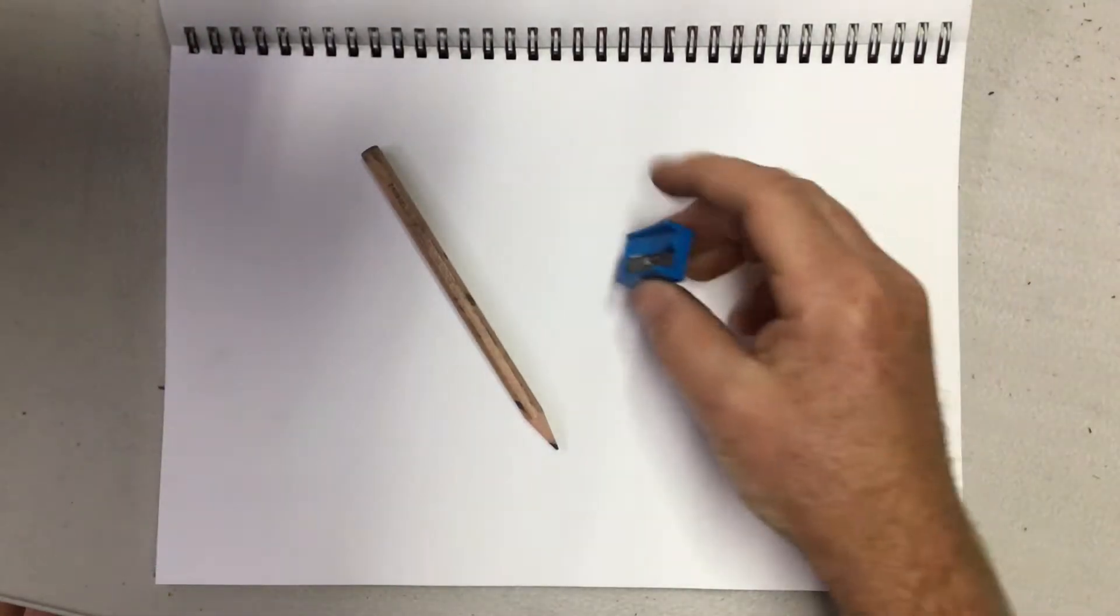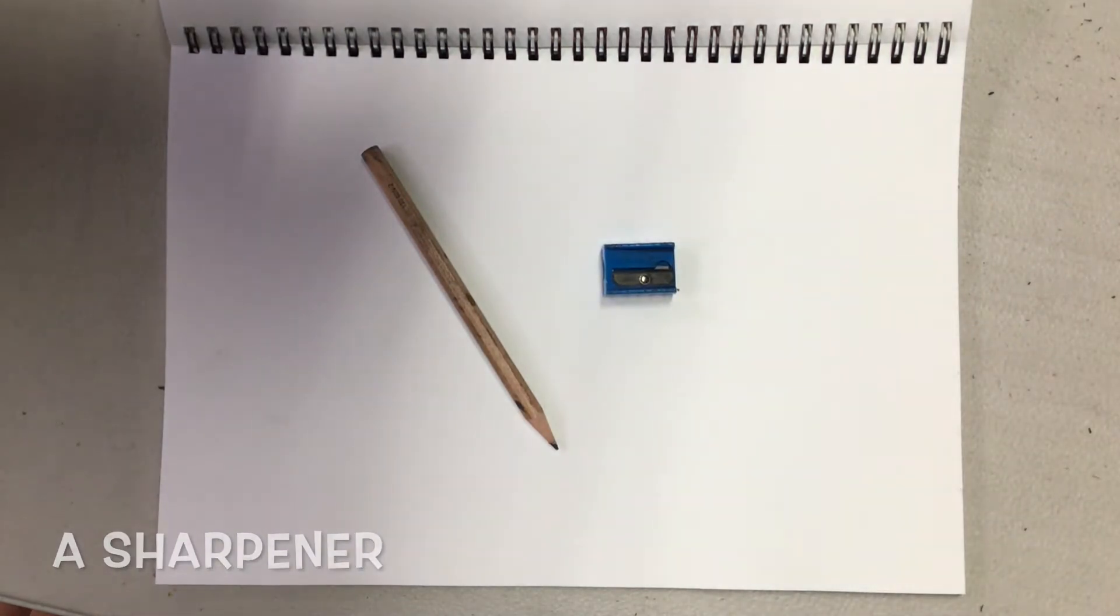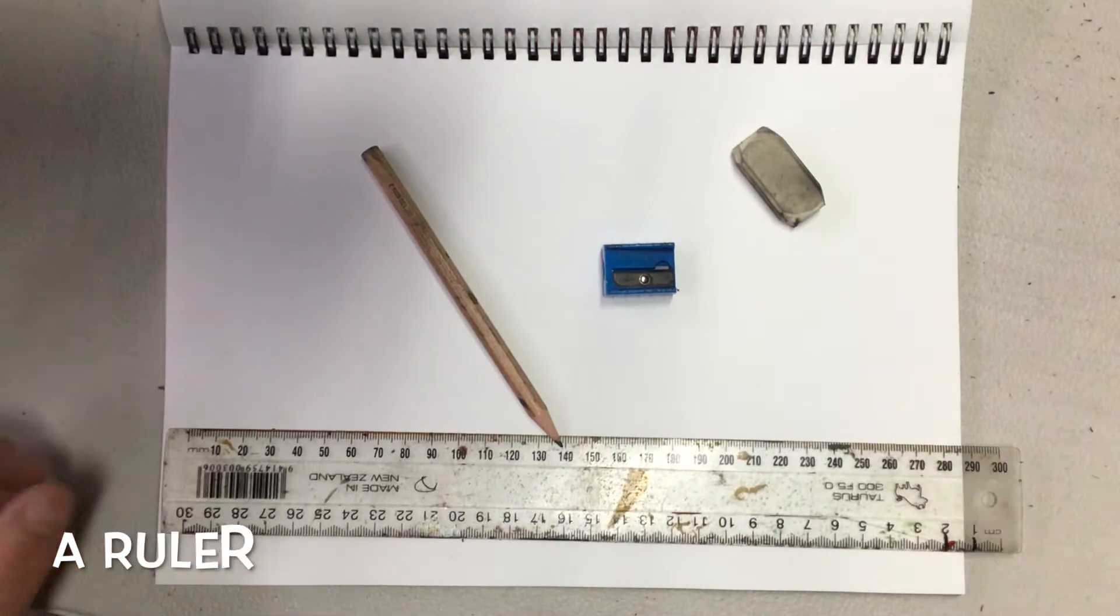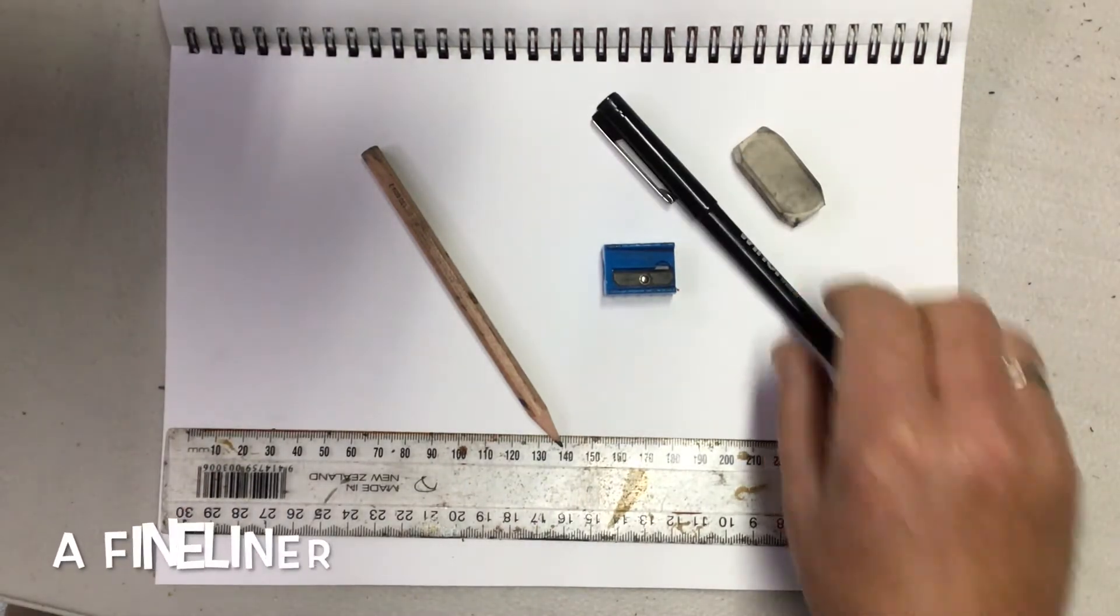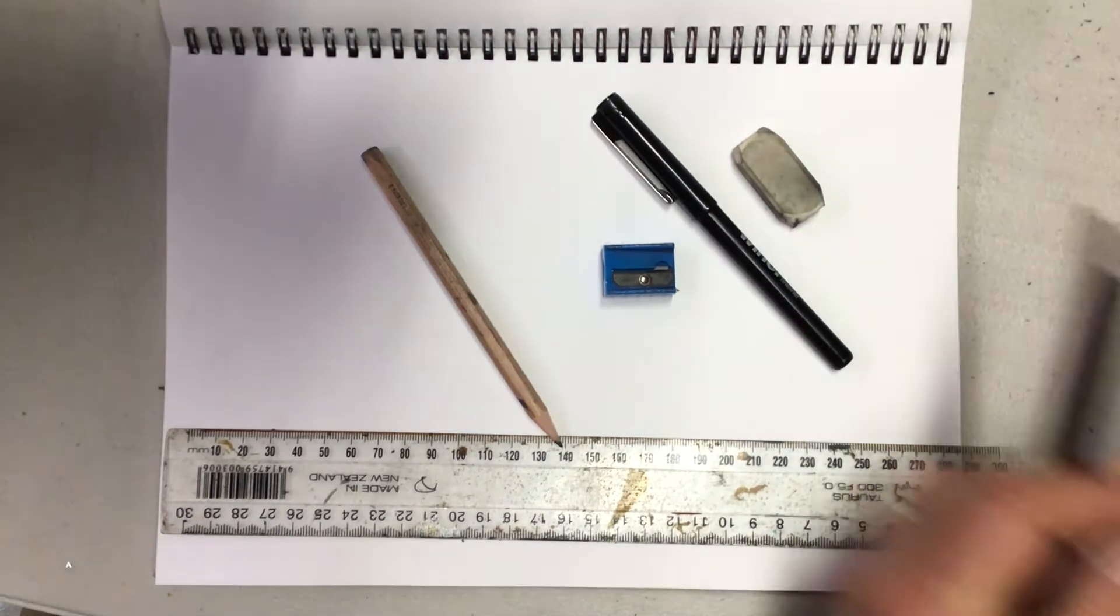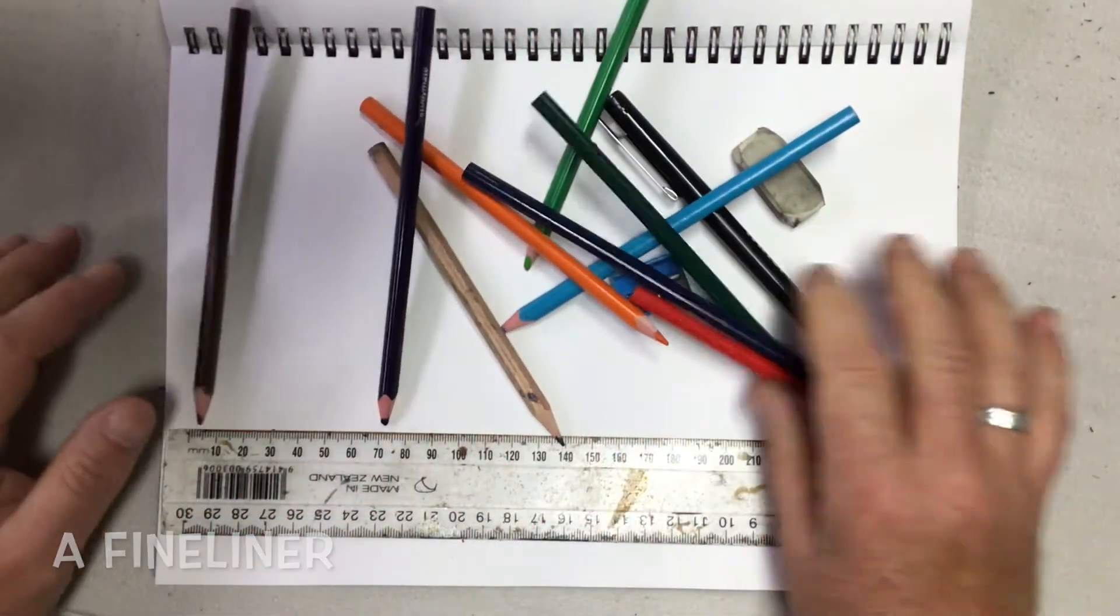For this lesson you're going to need a pencil, a pencil sharpener, a rubber, a ruler, maybe a fine liner, and an assortment of colored pencils. Let's get started.